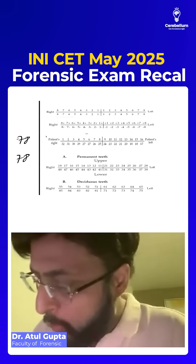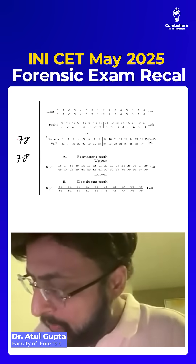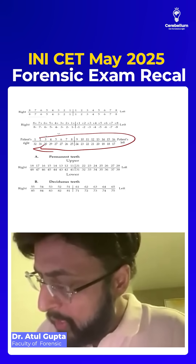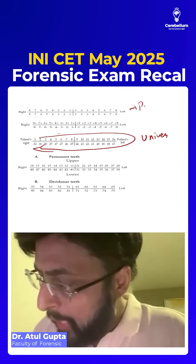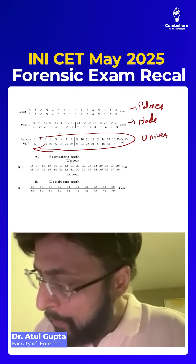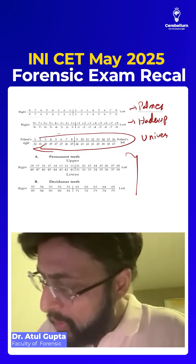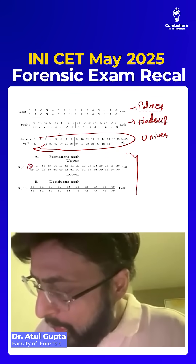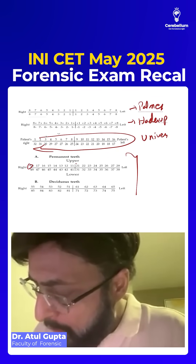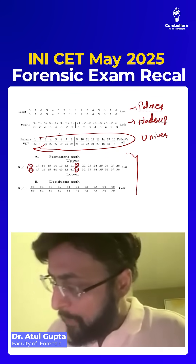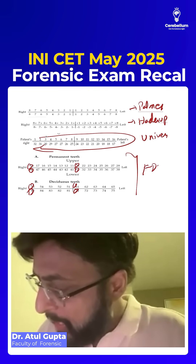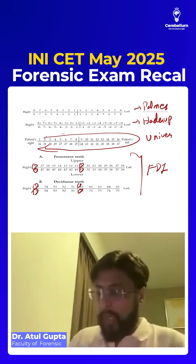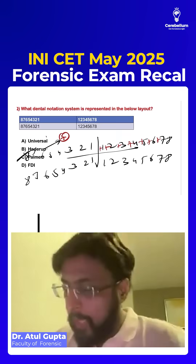Universal is simply we go like this from here to here. This is Universal. The first one is Palmer. The below one is Haderup. And the last — where we give every quadrant a number 1, 2, 3, 4 — these numbers we give 5, 6, 7, 8 — this is FDI. So here the answer will be Palmer.